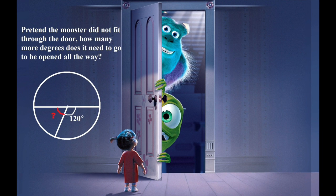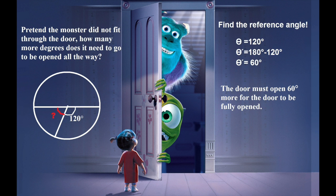Now, let's pretend the monster did not fit through the door. How much more would we have to open the door so the door is opened all the way? This is called finding the reference angle. By finding the reference angle, you get the closest angle, which is 180 degrees, and you subtract what you already have open, which is 120 degrees. Subtracting the 120 from the 180, you will get 60 degrees. Now, the door must open 60 degrees more to be able to fit the monster through and having the door fully open.